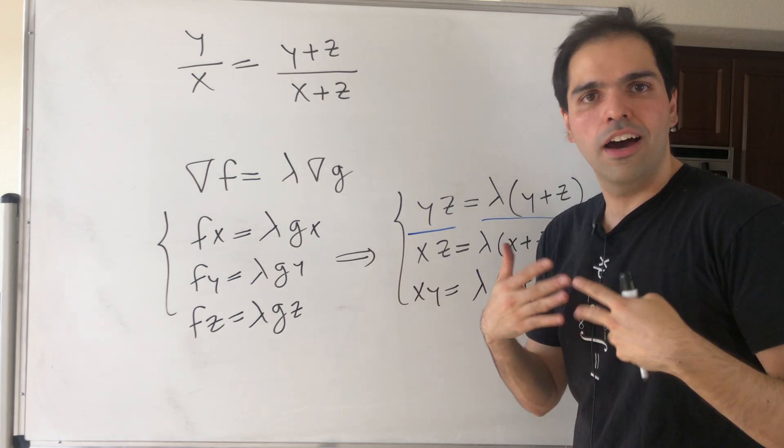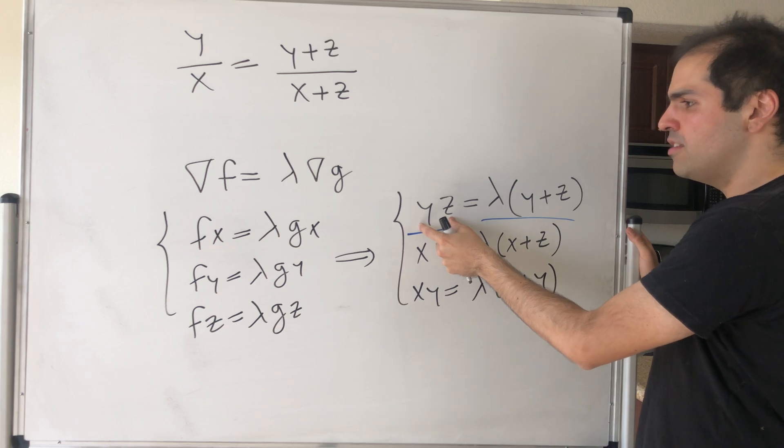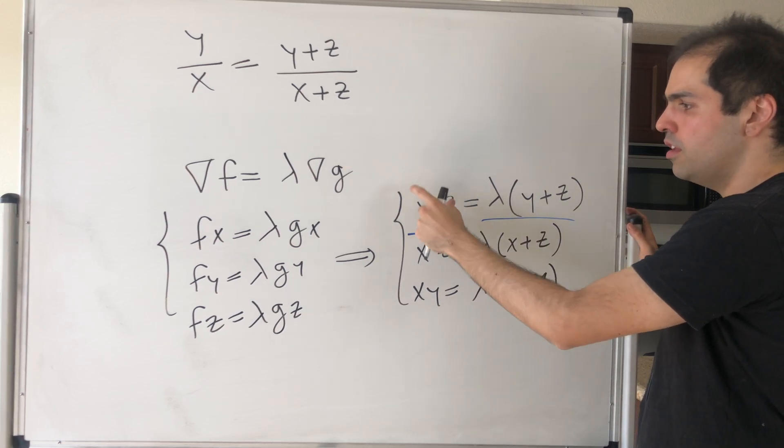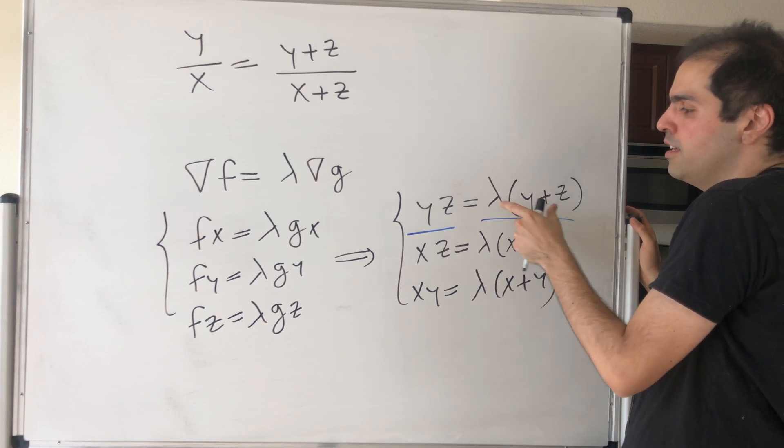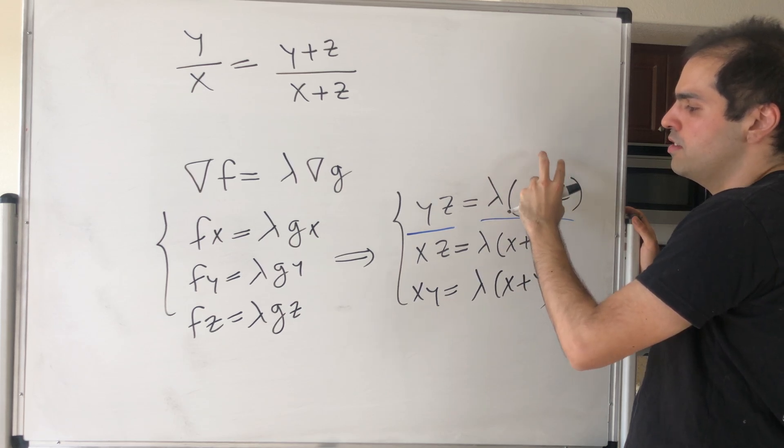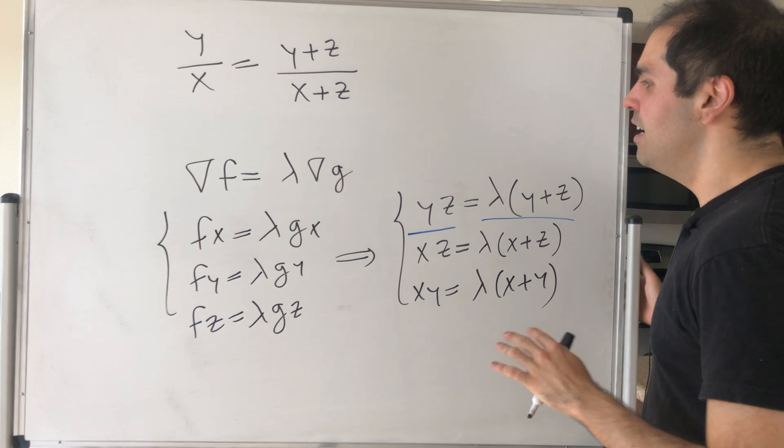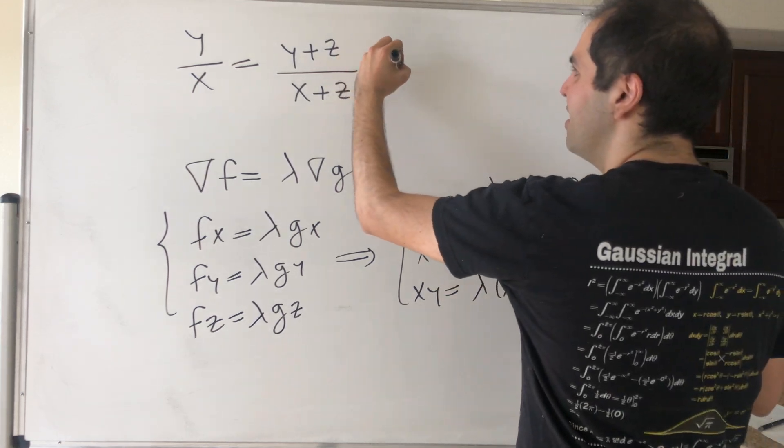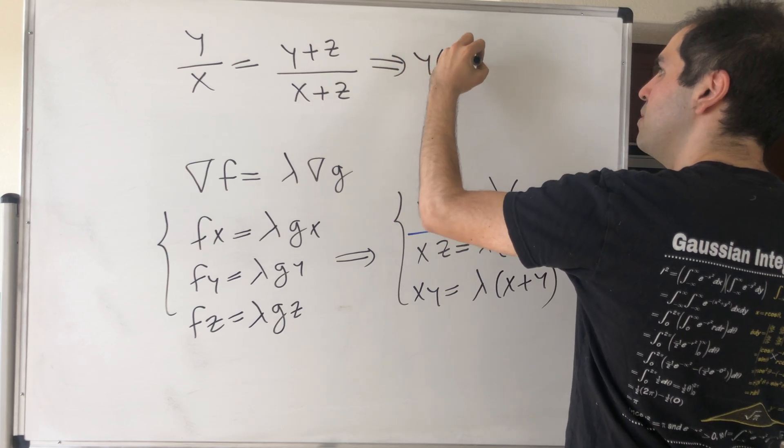You might object, what if lambda is 0? That is an excellent remark, because the Lagrange multiplier could be 0. But here y and z are distances, so they're positive. Y plus z is positive, and so if this positive number equals lambda times this positive number, the Lagrange multiplier can't be 0, so you can legitimately cancel this out.